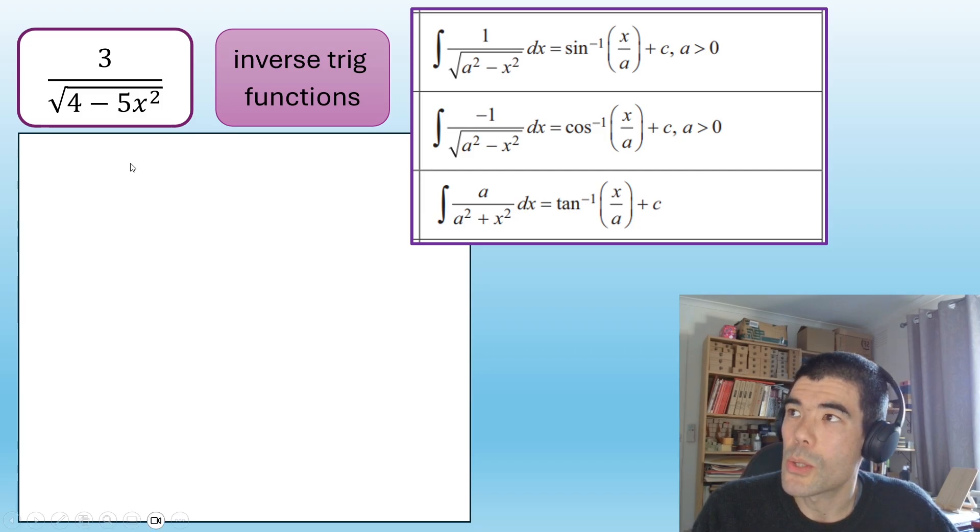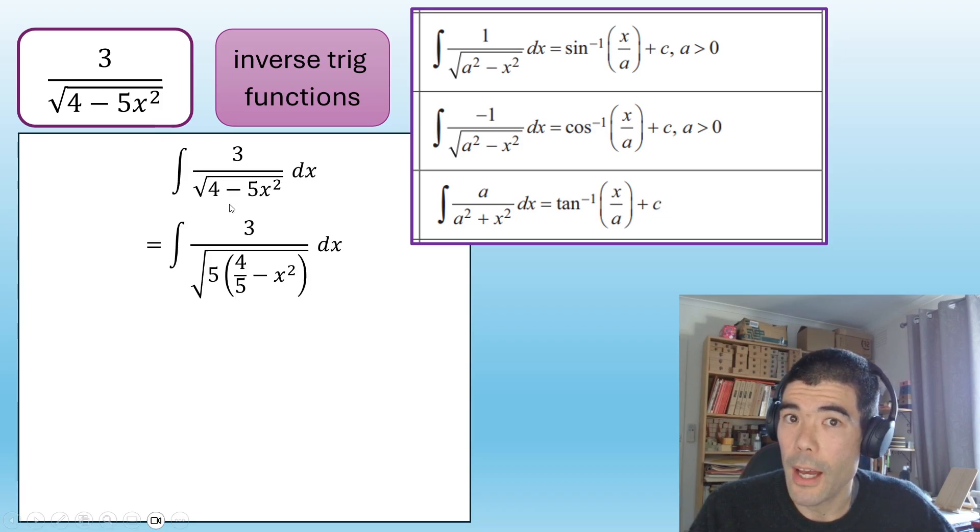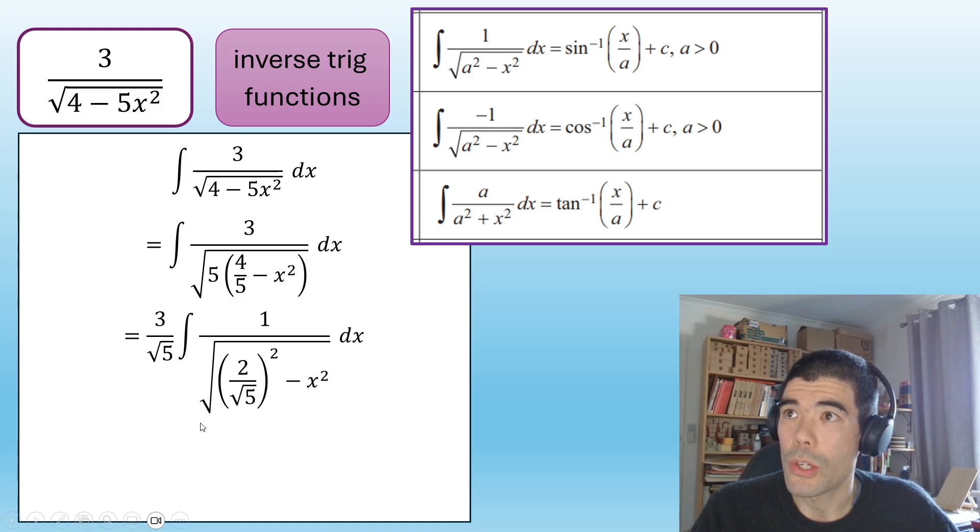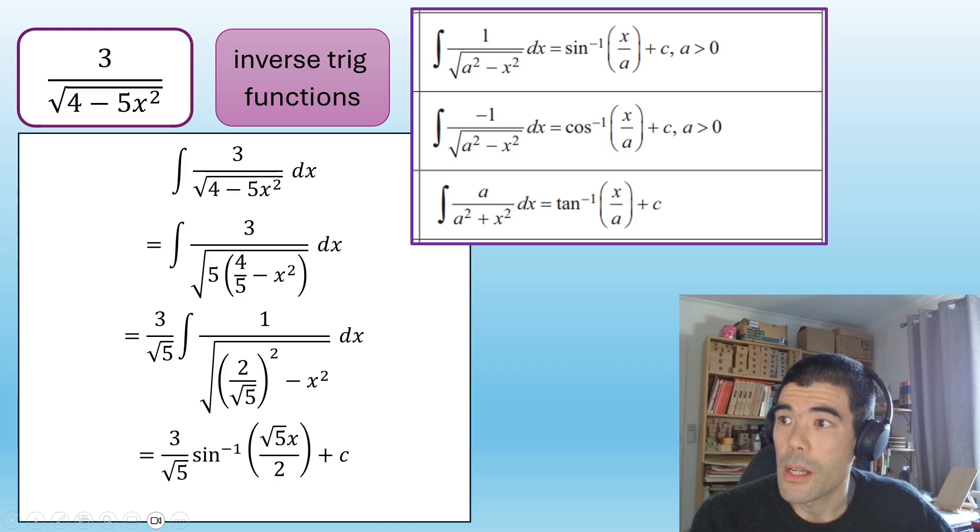Okay. I want to do one more inverse trig function. So something like this, where we have to do a little bit of manipulation first. So we could actually use either of those top two integrals. We're going to use an inverse sine. But because we've got a 5x squared there, what we can do to simplify that is take a common factor of 5 out on the denominator there. Okay. Then it looks like a squared minus x squared. If this 4 over 5 is that a squared. The 3 over square root 5, we're going to take that out of the integral completely. And then we have something which looks like our top formula there. So it's going to be inverse sine of x divided by 2 over root 5. When we divide by a fraction, we flip it and times. So we're going to have this here.